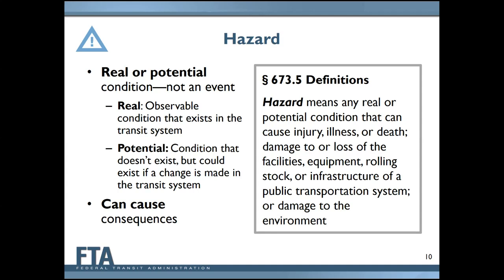An absolutely fundamental piece of what a hazard is: it is a condition — not an event, not something that happens. This is a key difference from traditional hazard management, where the word hazard might refer to an event that occurred, like a tire blowout. Within safety risk management, the distinction that a hazard is the underlying condition and not the resulting event helps ensure we're always focused on understanding the underlying safety concerns that can result in events.